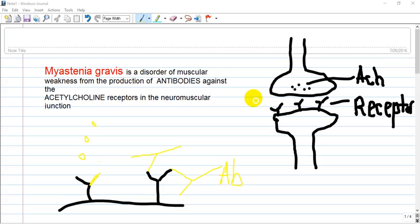Myasthenia gravis is a neuromuscular disease caused by antibodies against the acetylcholine receptor in the neuromuscular junction.